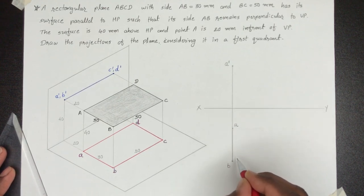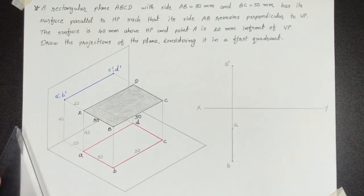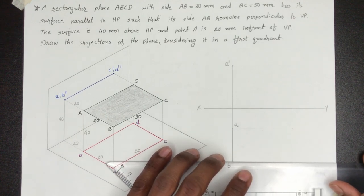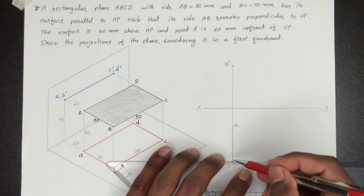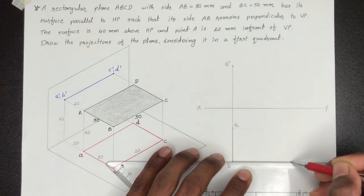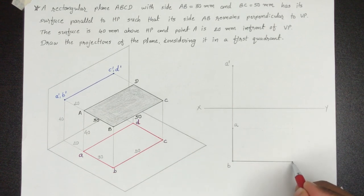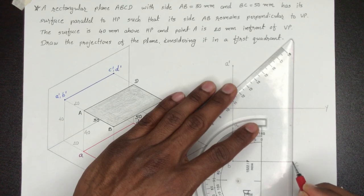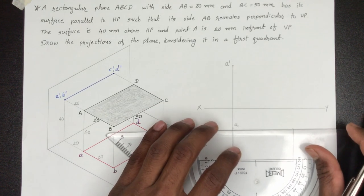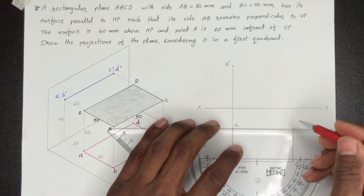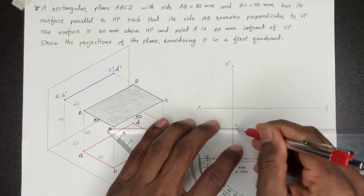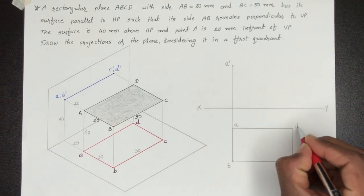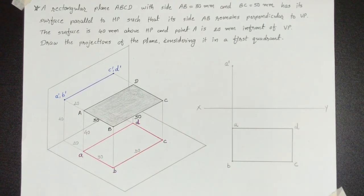AB distance हम रखेंगे 30 mm और B to C होगा 50 mm. उसके बाद हम यह rectangle complete कर देंगे — यह हुआ ABCD का true shape.